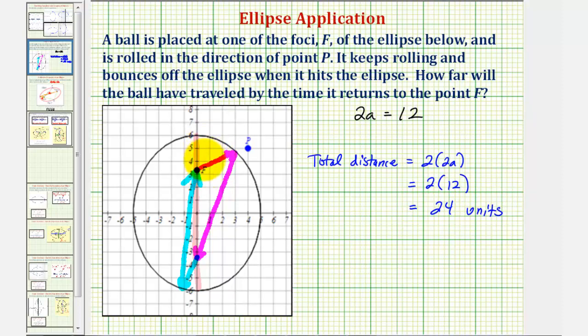Again, the ball traveled 12 units, the length of the major axis, from the first focus to the second focus, and then 12 more units from the second focus back to the first focus.